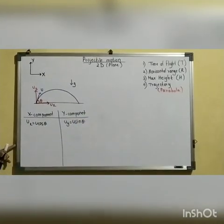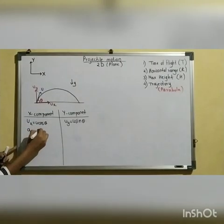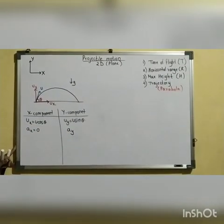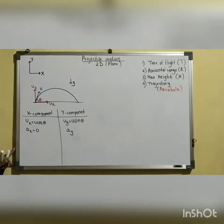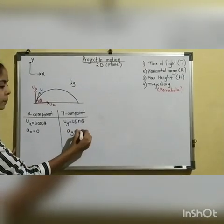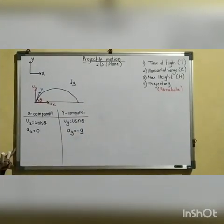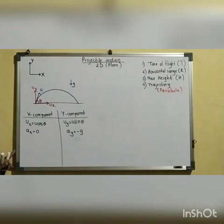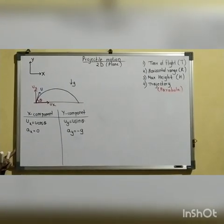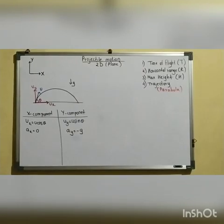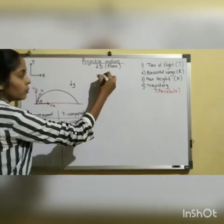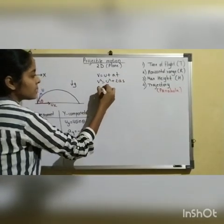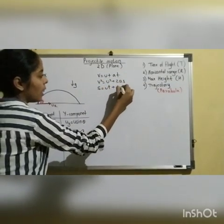There is no acceleration acting along the x-axis, so acceleration along x is equal to 0. The acceleration acting along the y-axis is g. Since g acts downwards and the body is moving upwards, acceleration is taken as minus g. Now we have resolved our two-dimensional motion into individual one-dimensional motions, and on one-dimensional motion we can apply the kinematic equations: v = u + at, and s = ut + half at squared.